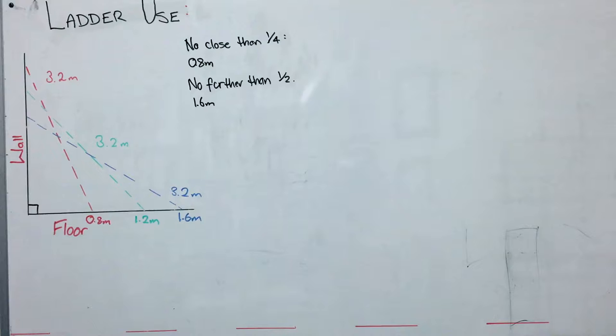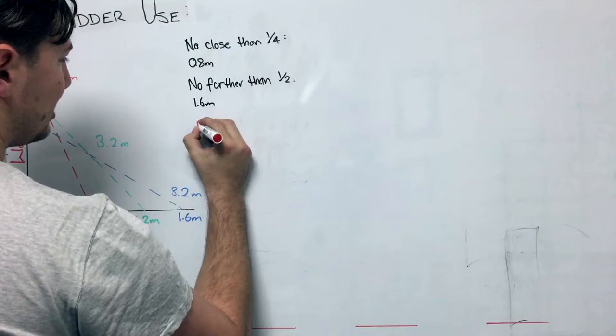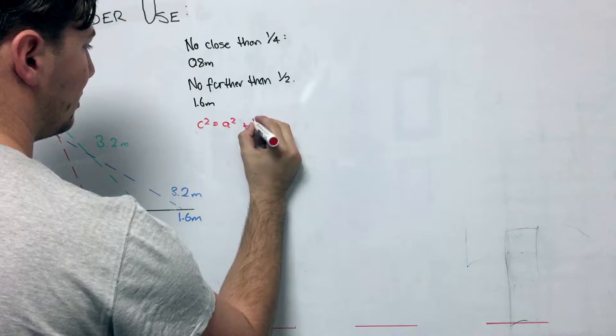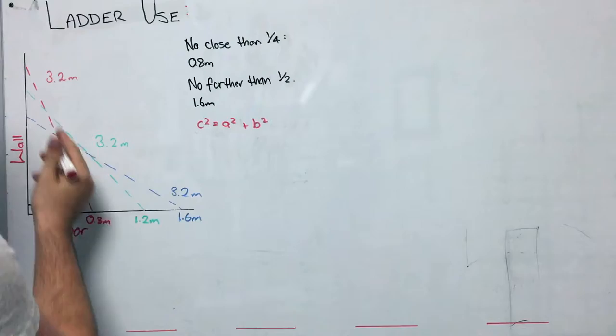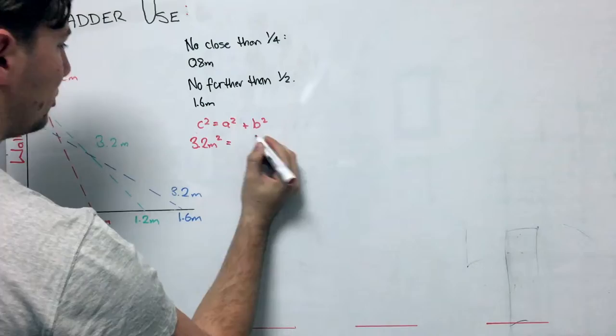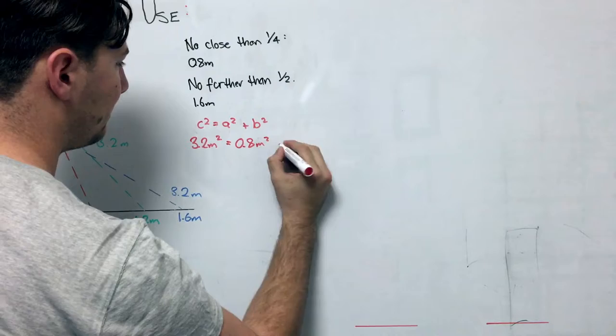And so using Pythagoras' theorem, we can find this. And so we know that that is going to be C² = A² + B². Now we know that C² in this equation represents the hypotenuse, our longest length, so that will be whatever is opposite of our right angle. And so that's always going to be 3.2 in this question. So we've got 3.2 metres squared, which equals A squared, can be our 0.8 down the bottom, metres squared plus our B squared value.